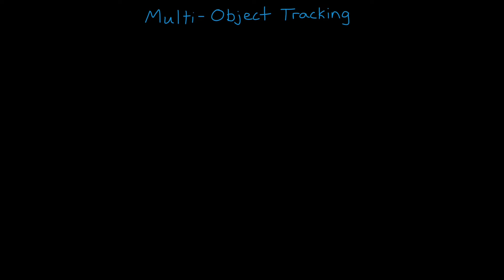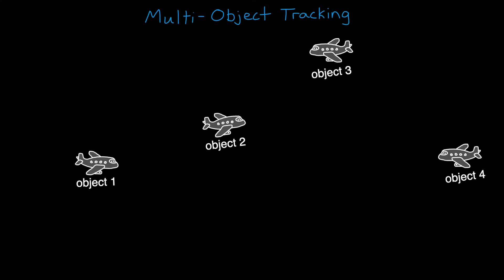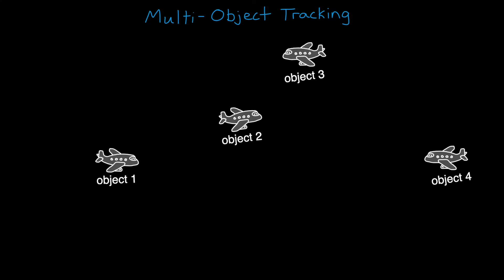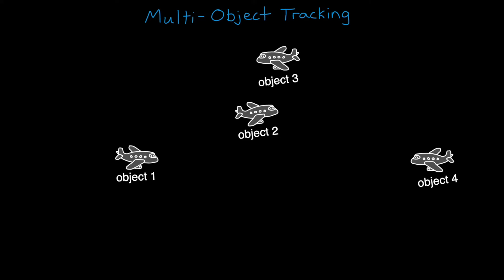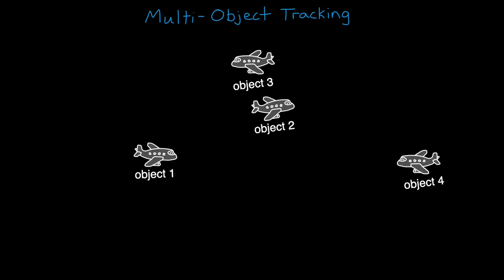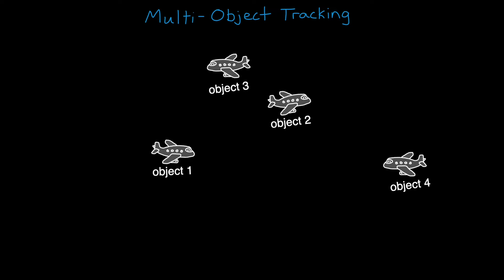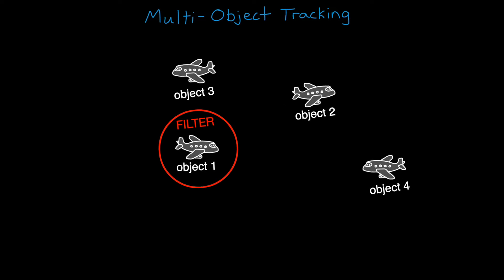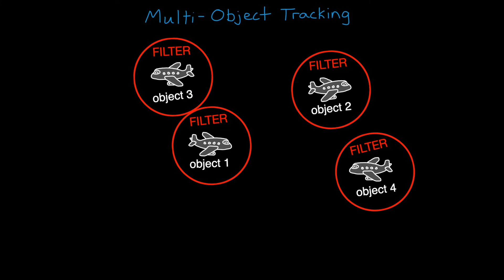In this video, we're going to take what we've learned about tracking a single object and expand it to tracking multiple objects all at once. And at first glance, it doesn't seem like this problem is that much harder than tracking a single object. For example, can't we just take the tracking algorithm like the IMM from the last video and apply one to each object and be done?